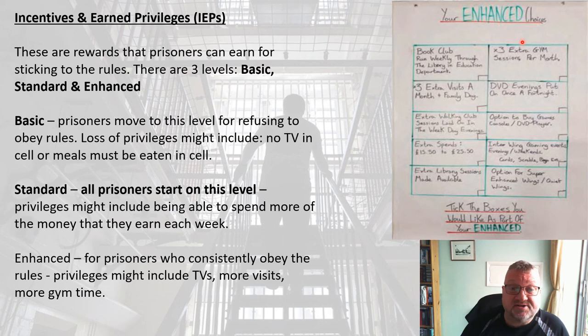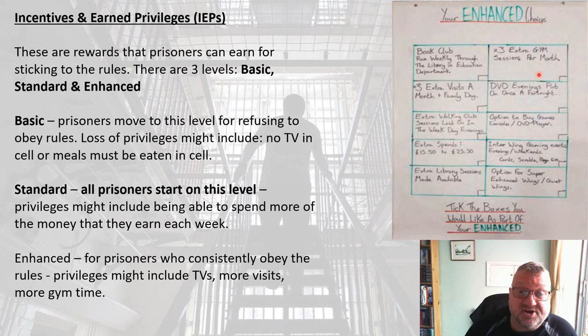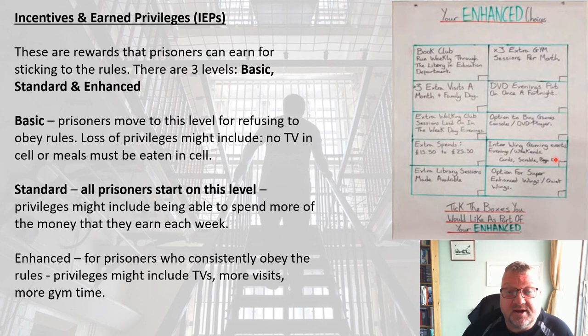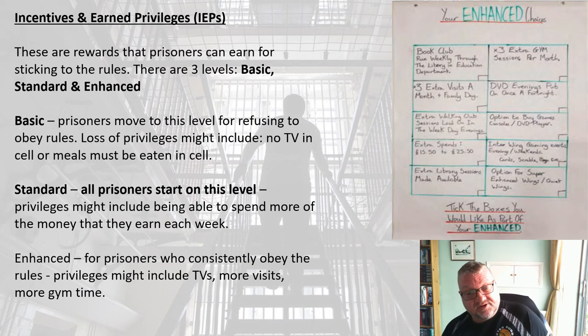An example poster made by a prisoner shows what enhanced status can mean at one prison: three extra gym sessions per month, DVD evenings once a fortnight, the option to buy games consoles and a DVD player, inter-wing gaming events, extra library sessions, and increased weekly spending from £15.50 to £25. Privileges differ from prison to prison.